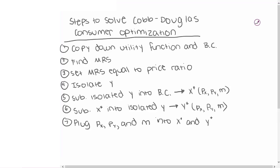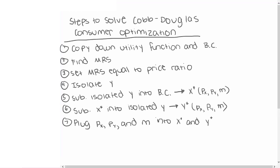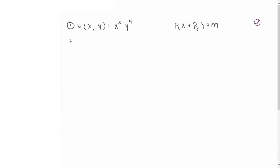Let's move into the first step. The very first thing we want to do is copy down the utility function given in the prompt and the general formula for our budget constraint. Our utility function is x squared times y to the fourth power. Our budget constraint is the same general formula every time: px times x plus py times y equals m. That first step is just getting us set up, since we'll be using both of those formulas as we go.